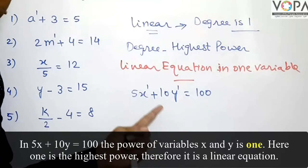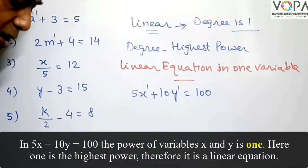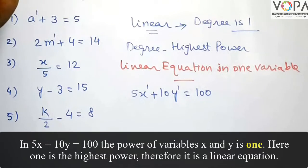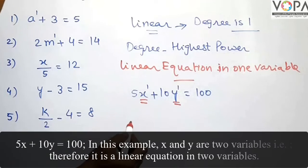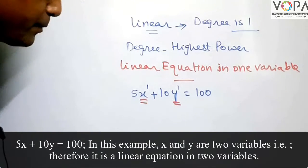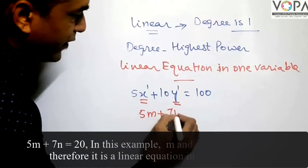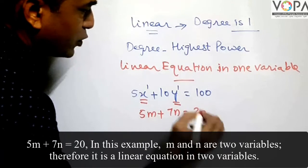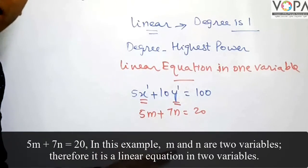This equation is also a linear equation, but there is not one variable here — there are two variables. Therefore, this equation is called a linear equation in two variables. Let's take another example: 5m plus 7n equals to 20. This equation is also a linear equation in two variables, as it has more than one variable.